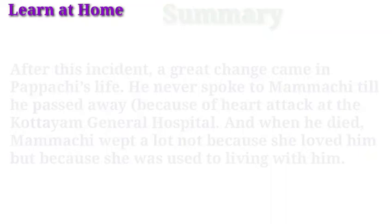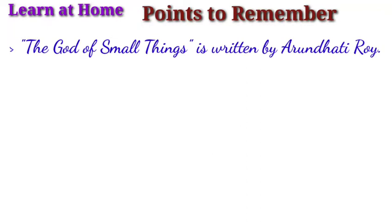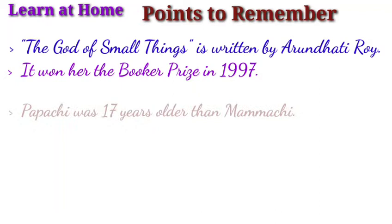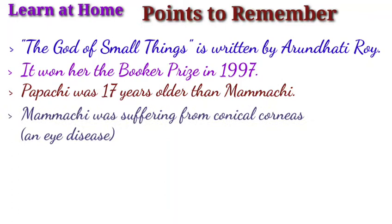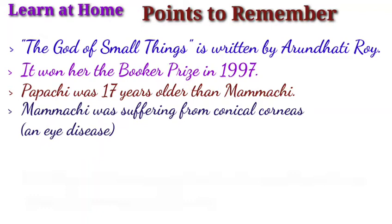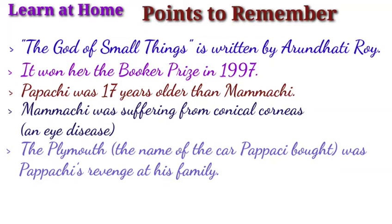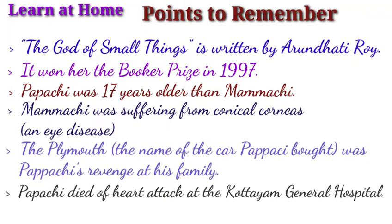Points to remember: 'The God of Small Things' is written by Arundhati Roy and it won her the Booker Prize in 1997. Papachi was 17 years older than Mamachi. Mamachi was suffering from keratoconus, a cone-shaped eye disease. The Plymouth — the name of the car Papachi bought — was Papachi's revenge on his family. Papachi died of a heart attack at the Kottayam General Hospital. The main theme of the lesson is Gender Discrimination.